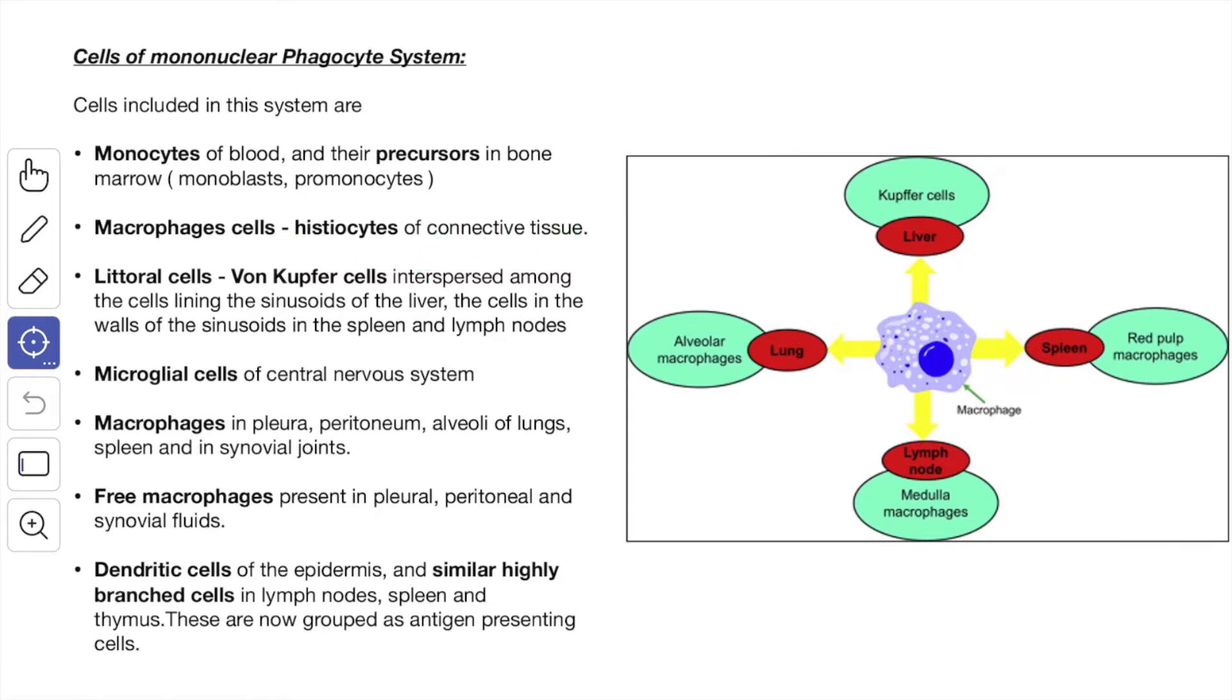Then the littoral cells or Kupffer cells interspersed among the cells lining the sinusoids of the liver and the cells in the walls of the sinusoids in the spleen and lymph nodes. The microglial cells of the central nervous system and the macrophages in the pleural, peritoneum, alveoli of the lungs, spleen and in the synovial joints.